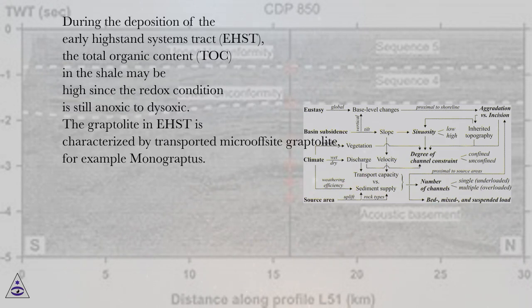During the deposition of the early high-stand systems tract (EHST), the total organic content (TOC) in the shale may be high since the redox condition is still anoxic to dysoxic. The graptolite in EHST is characterized by transported micro-fossil graptolite, for example Monograptus.